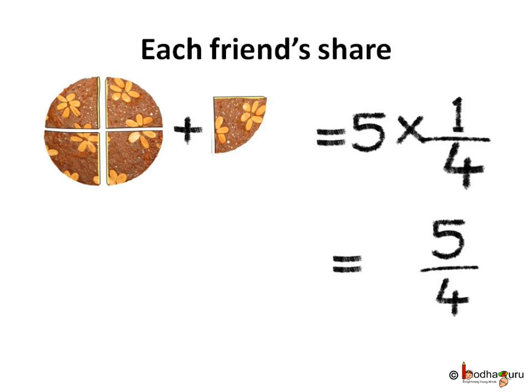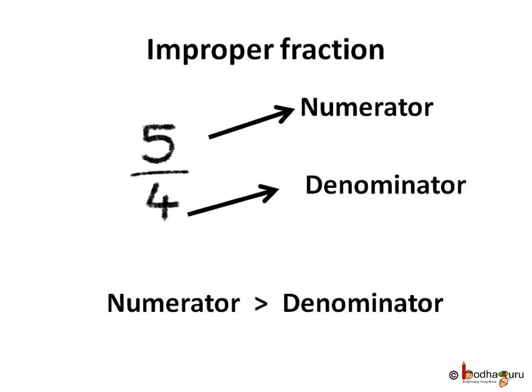See, five multiply by one fourth is equal to five fourths. Look here, in the case of five by four, the numerator which is five is greater than the denominator which is four, but still it is a fraction. So it is called improper fraction.